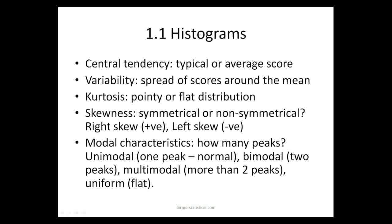There are five characteristics to look at of a histogram. The first is central tendency. Does the data have a natural central tendency? That is a typical average score in the middle and then equally distributed on either side. Is there variability? That is a spread of scores around the mean. Do they bunch or do they spread out?